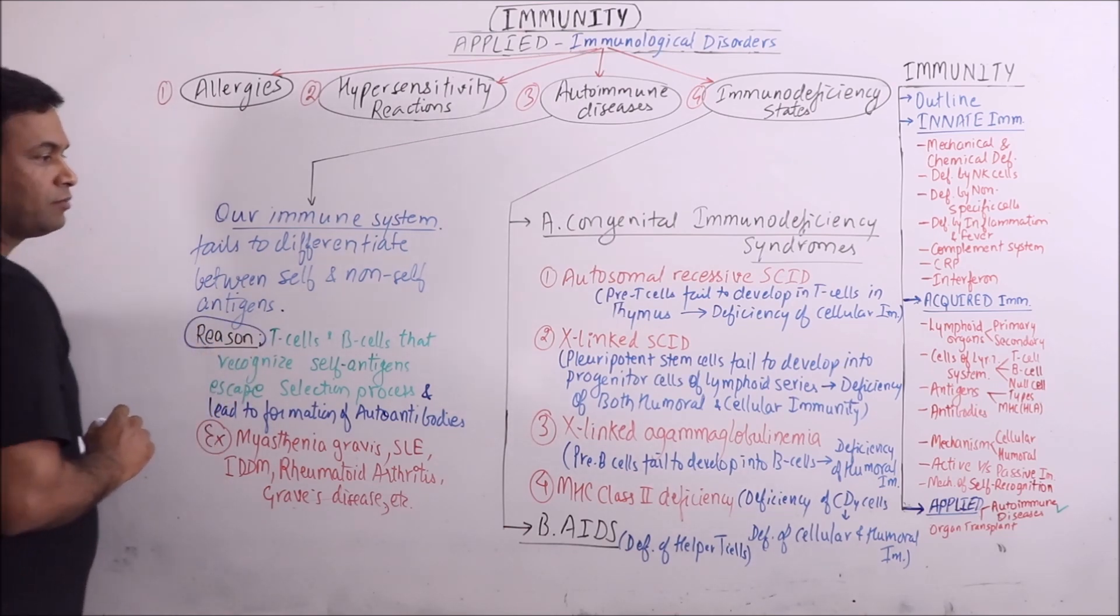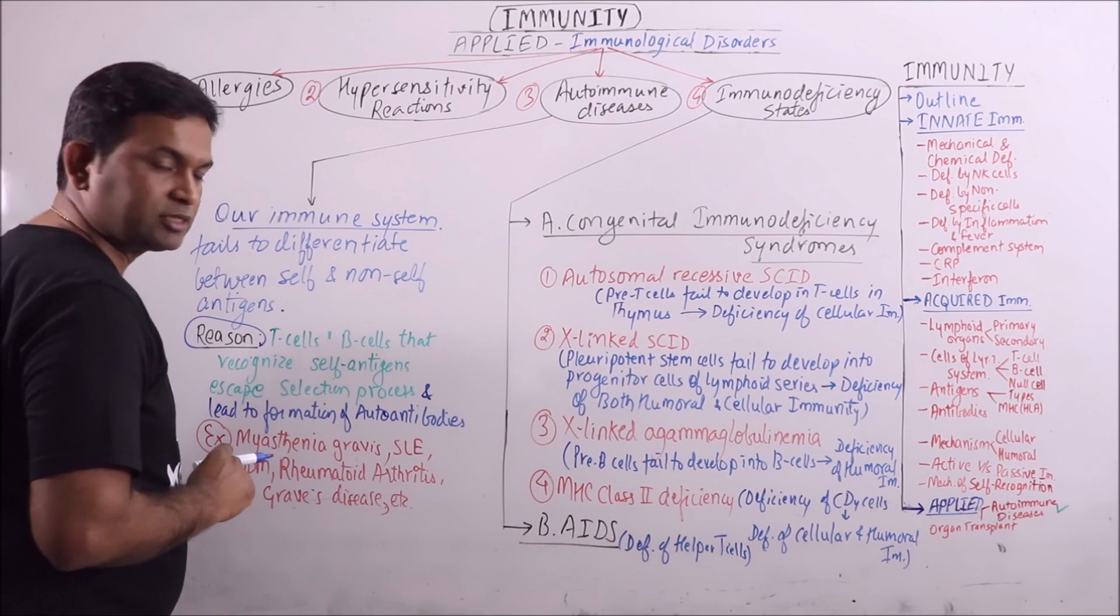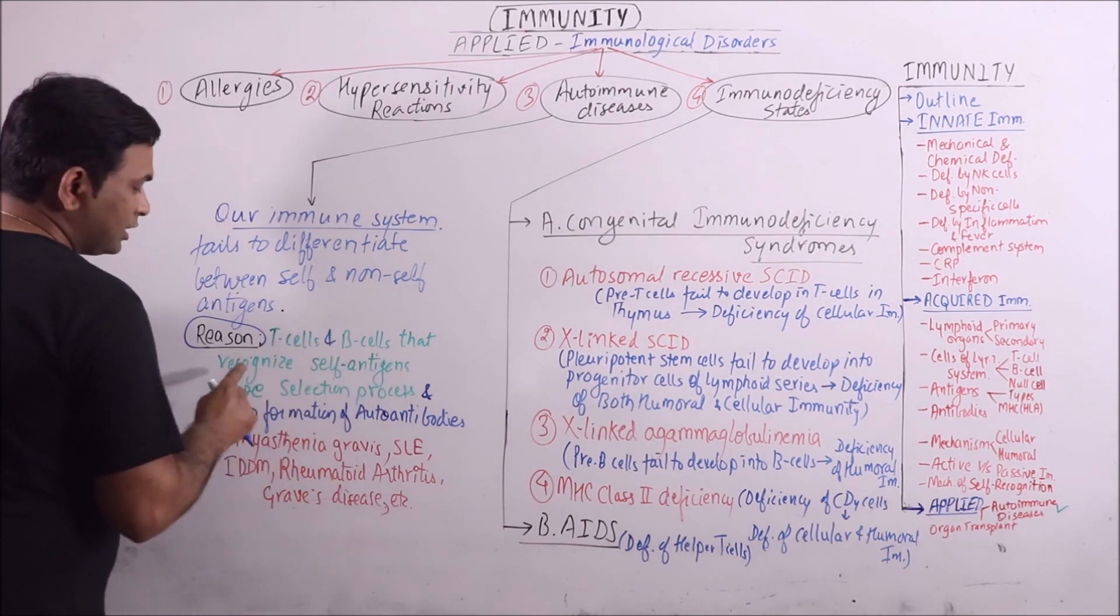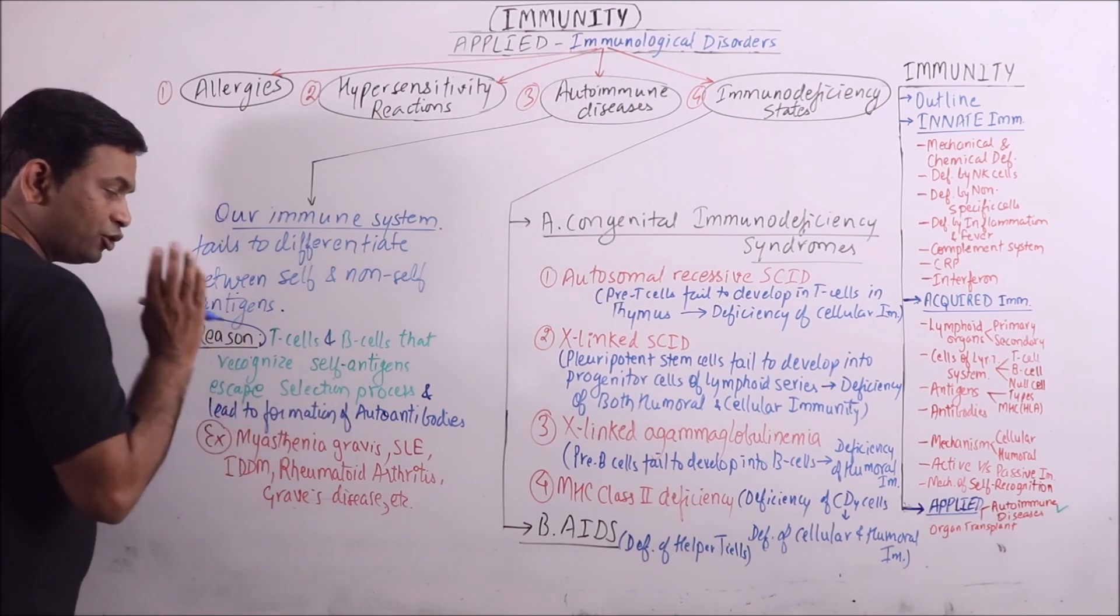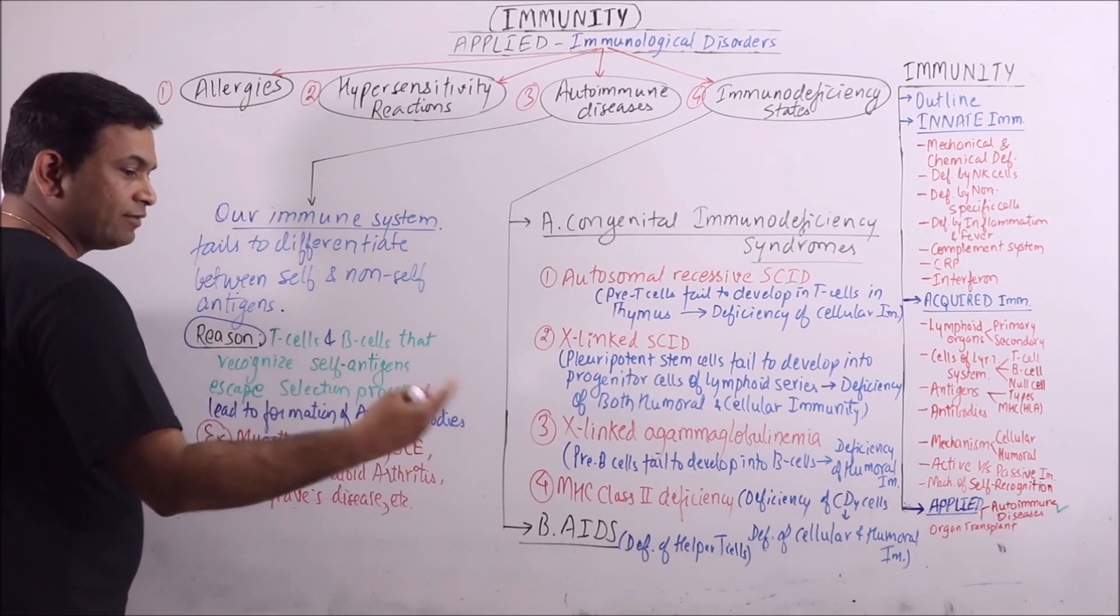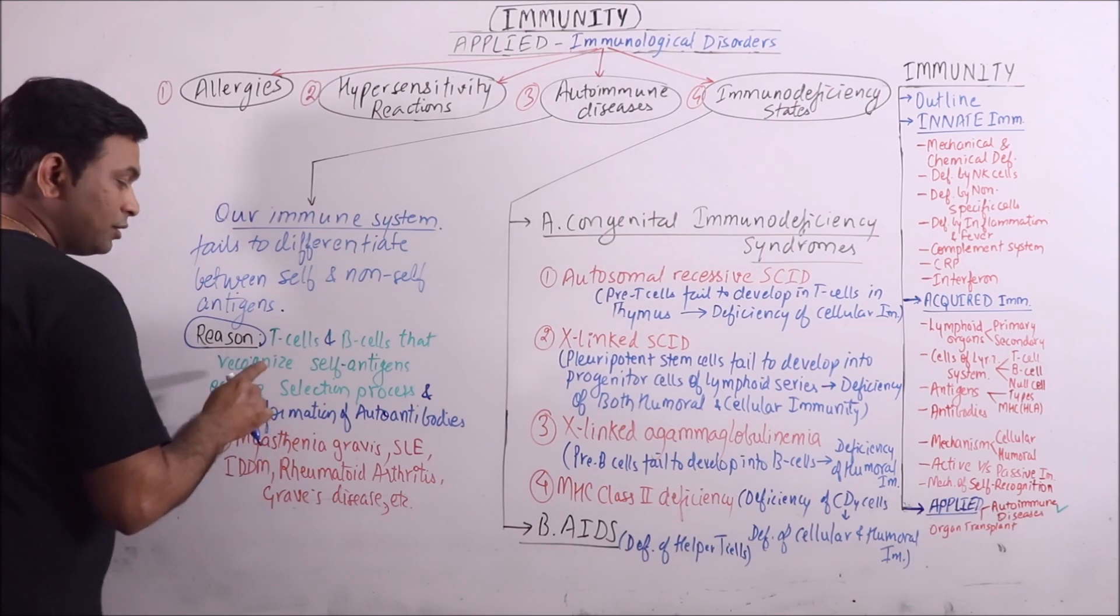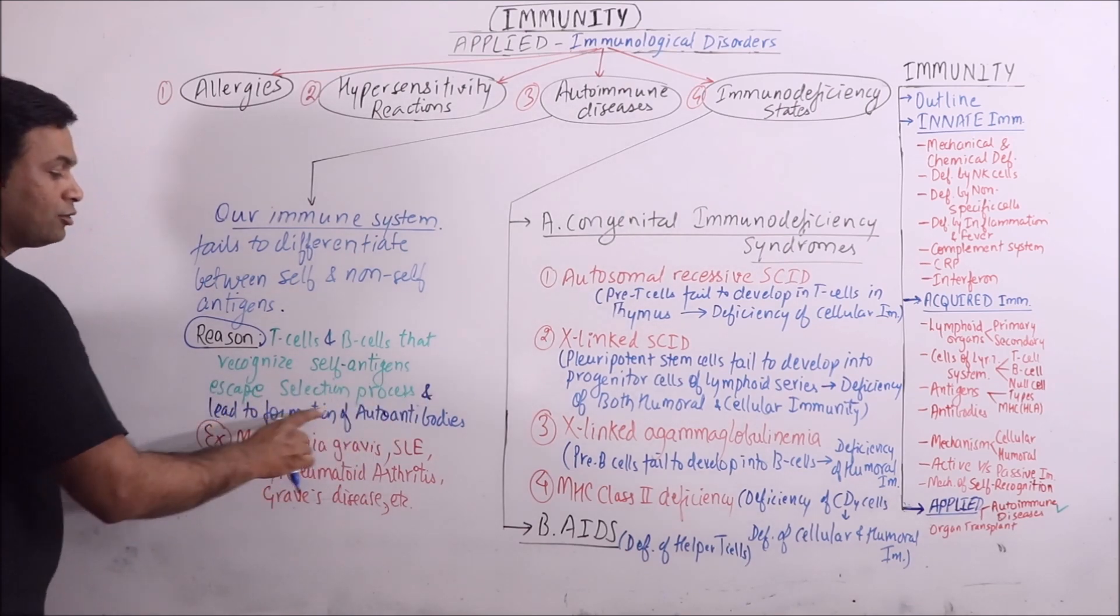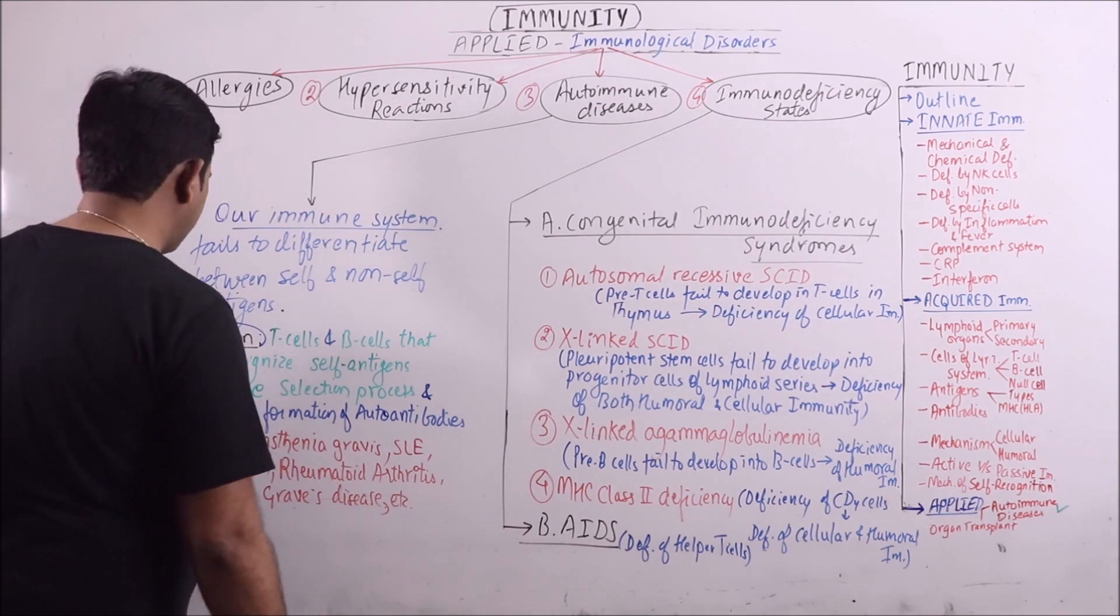We have discussed in the previous lecture about the positive selection and the negative selection. So the T cells and the B cells that recognize self antigens usually these are destroyed. But if they escape the selection process, they lead to the formation of autoantibodies.